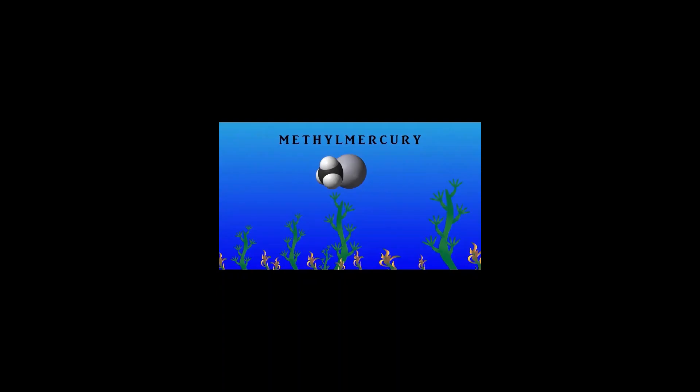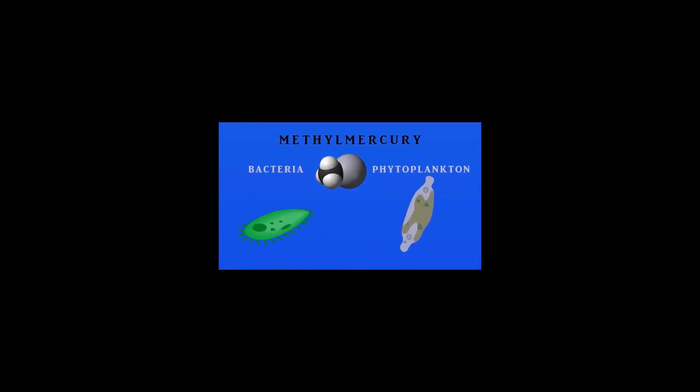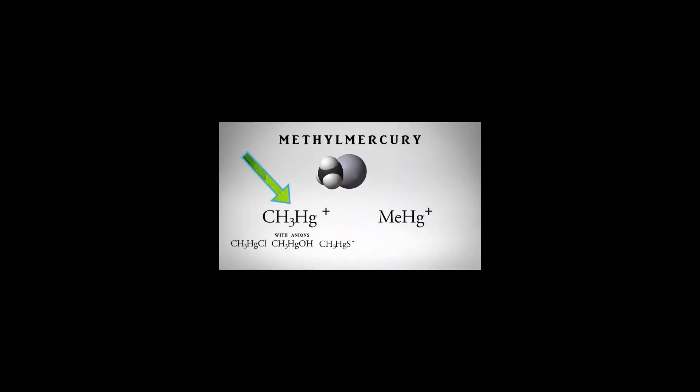Next is the ecological effect of mercury pollution. Mercury pollution that takes place in aquatic environments like the ocean will cause the inhabiting organisms to have high concentrations of mercury in them. Mercury, once deposited in water, will be absorbed by certain microorganisms and will change into methylmercury.